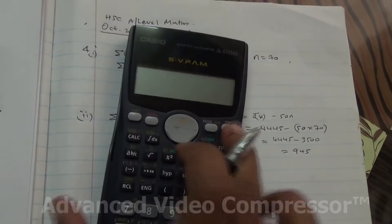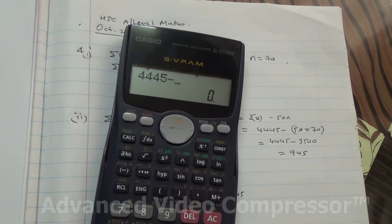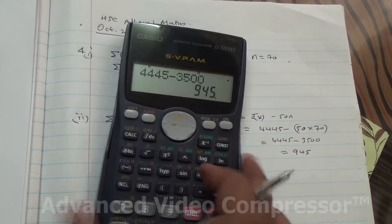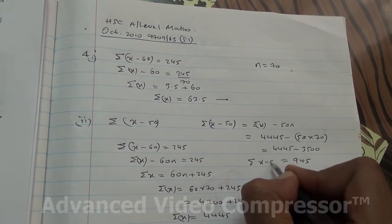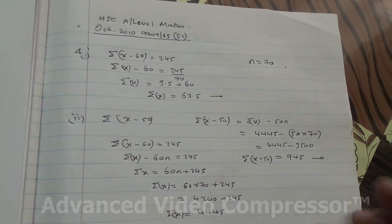So check it out. Minus 3500 is 945, so this is the summation of x minus 50 there.